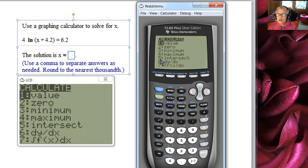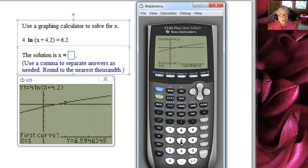Because we're going to go to second calc and choose intersect and let the calculator decide on the point of intersection. We're going to be looking for the x coordinate of the point of intersection. So, we click on 5.